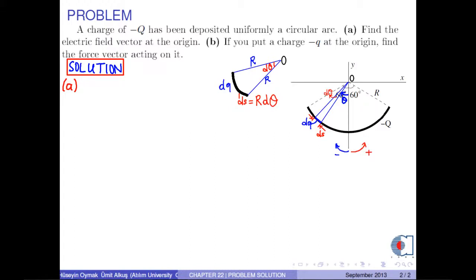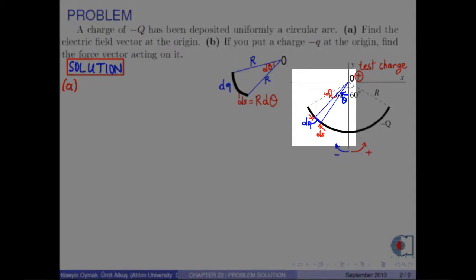In order to find the electric field at the origin, we assume that there is a positive test charge at the origin. Since dq is a negative charge, the electric field is drawn from point O to dq.